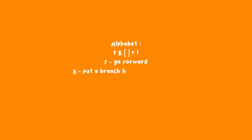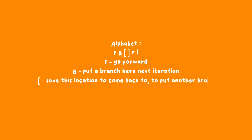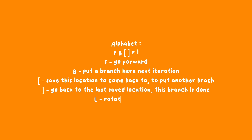Our alphabet is: F, B, open and close square brackets, L, and R. F means go forward or draw a branch. B means next iteration of the rewriting the B is replaced with two branches. L and R are rotations. The square brackets indicate a branching-off point — when we see an opening square bracket we save the location we're at, follow the instructions inside the brackets drawing all the branches, and when we reach the closing bracket we return to the saved location.